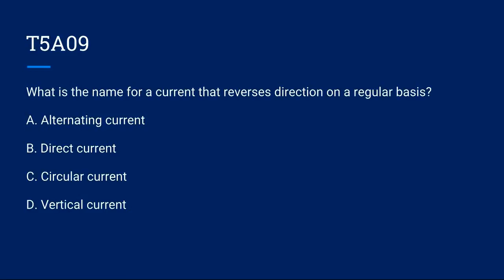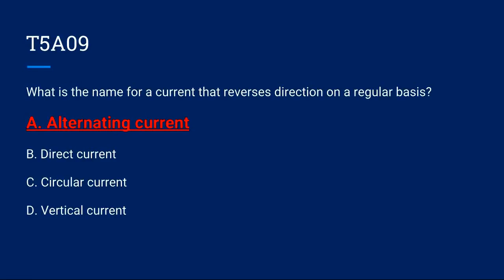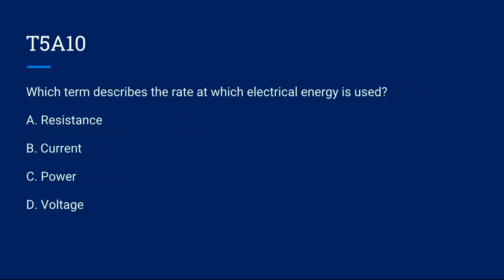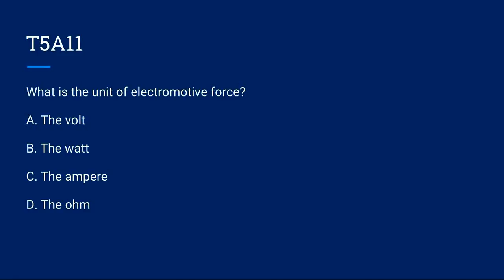T5A09, what is the name for a current that reverses direction on a regular basis? A. Alternating current, B. Direct current, C. Circular current, or D. Vertical current? The correct answer is A. Alternating current. T5A10, which term describes the rate at which electrical energy is used? A. Resistance, B. Current, C. Power, D. Voltage. The correct answer is C. Power.